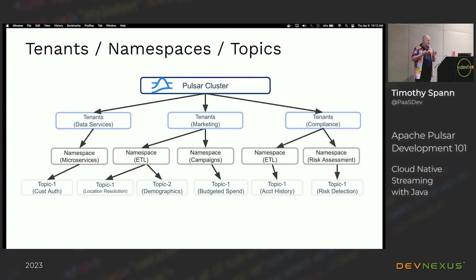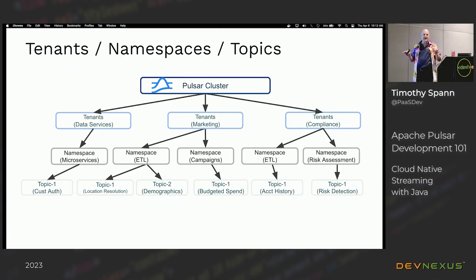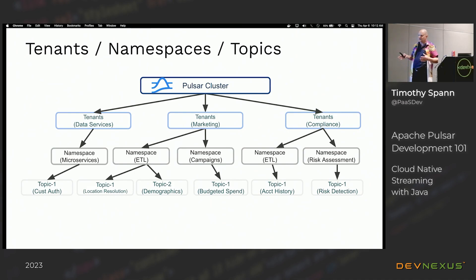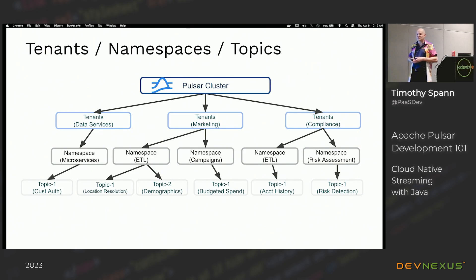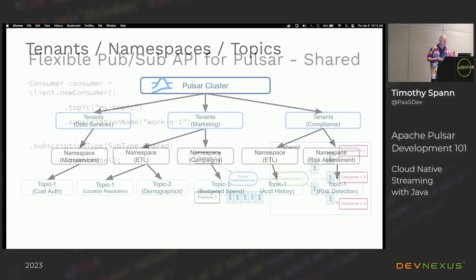Sometimes you want a work queue where order doesn't matter — Pulsar supports shared subscriptions, more common in JMS-style message queues. One platform to do all that type of messaging. Another feature unique to Pulsar versus Kafka is support for multi-tenancy: set up a tenant, underneath that set up namespaces, then set up topics. Companies use this to host multiple companies or groups on one cluster. It also means you can have better names for topics, and installations with more than a million topics are not a problem.